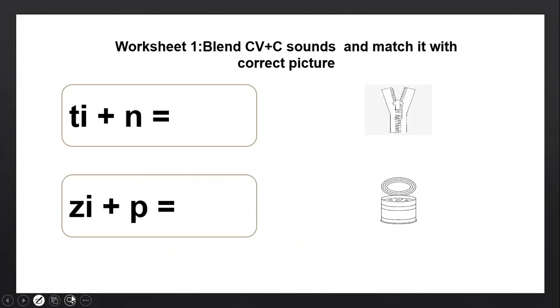So what does worksheet one say? Blend CV plus C sounds and match it with the correct picture. So we are going to blend CV plus C sound and match it with the picture.